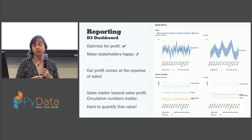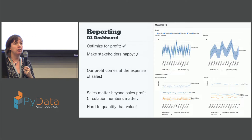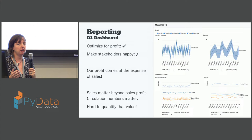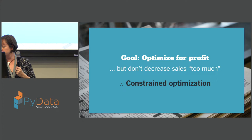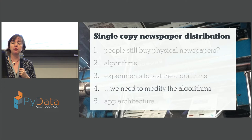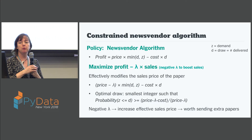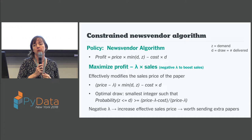This put us in a bit of a bind because we were still wanting to optimize for profit, but don't lose too many sales — and they wouldn't define how many sales are too many sales. This turns out to be a really good case for constrained optimization. What we did was modify our use of the newsvendor policy function, because we no longer want to optimize purely for profit — what we want to do is maximize profit but also put some weight on the sales numbers.